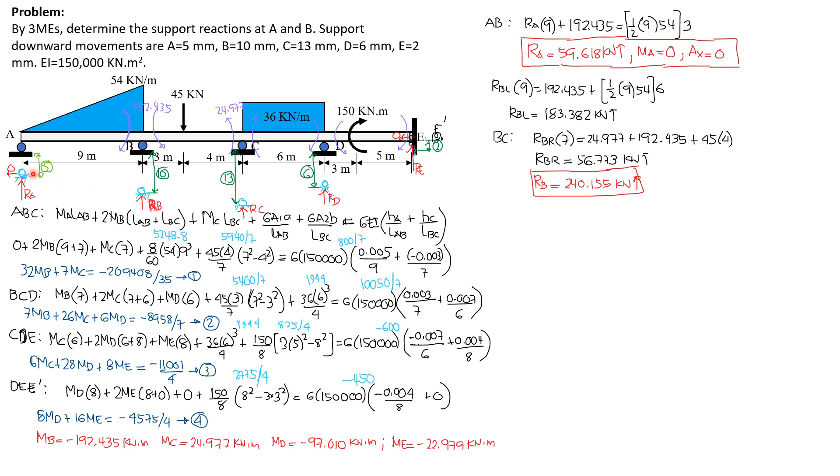Then quantity, A is above B by 5mm, 10 minus 5, and 5mm is 0.005. That's why it is treated positive over length AB, which is 9, then C is below B by 3mm, so that's why plus negative 0.003 meter over 7, and the value is 800 over 7. Simplifying and combining the constants, we have for our first equation, 32MB plus 7MC equals negative 209,408 over 35. We will call this equation 1.